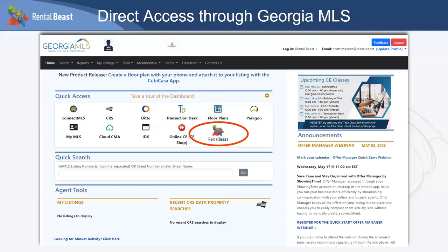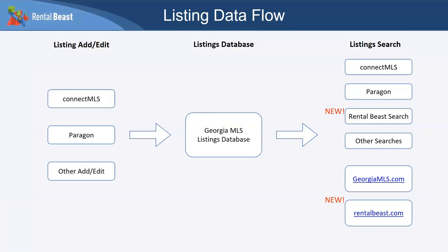In terms of listing data flow: if you have a rental listing, keep adding it exactly the same way you always have — through Connect MLS, Paragon, or whichever system you use. It goes into the Georgia MLS listings database and gets pushed out automatically. What you should NOT do is manually add your listing into Rental Beast — we will automatically pull your rental listing in. You don't have to do anything extra.